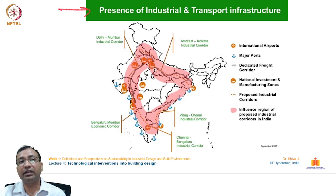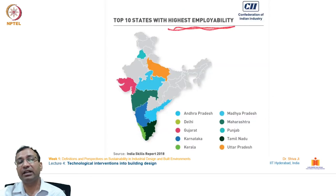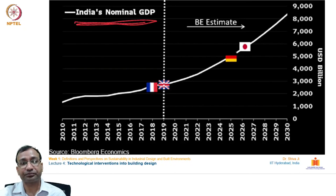Along these corridors, major industrial and transport corridors are coming up, with dedicated freight carriage corridors where double-tier freight trains and very large-capacity trains can run. This shows India's preparedness. The top 10 states with the highest employability — listed alphabetically including Andhra Pradesh, Delhi, Gujarat, and others — are majorly in southern, western, and parts of northern India including Delhi, Uttar Pradesh, and Punjab.